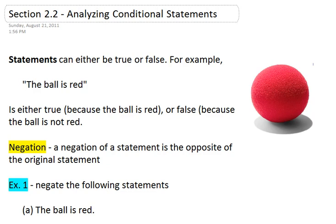Section 2.2: Analyzing Conditional Statements. Statements can be either true or false. For example, we have 'the ball is red.' This statement is either true because the ball is red, which we do see is true, or false because the ball is not red.